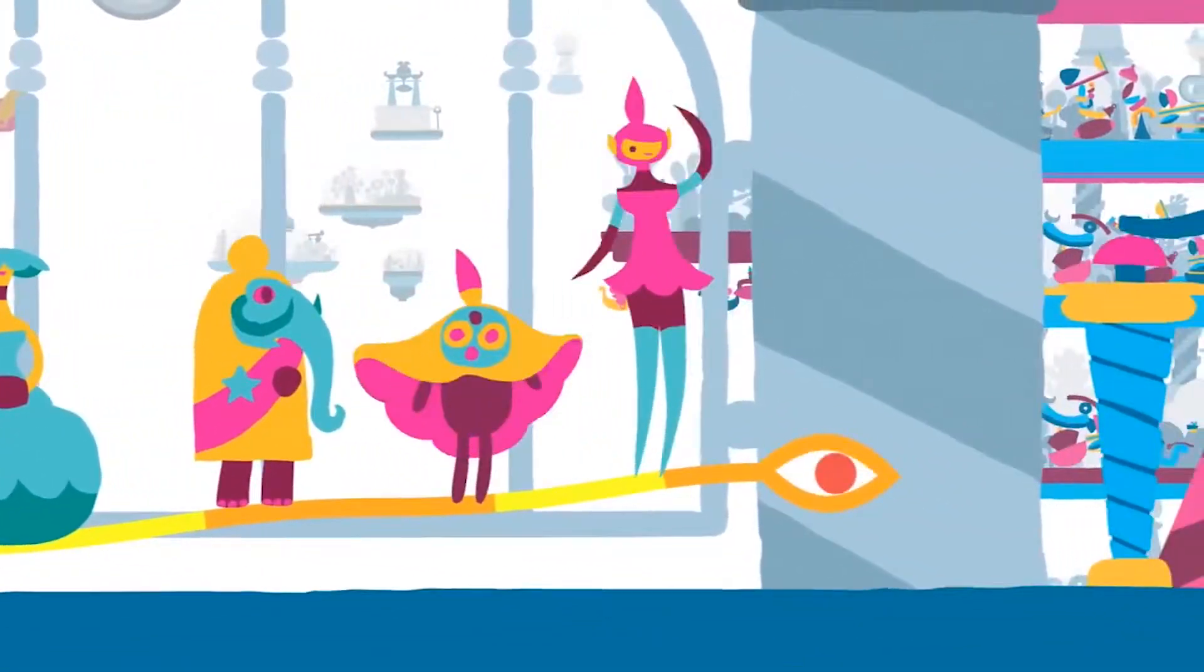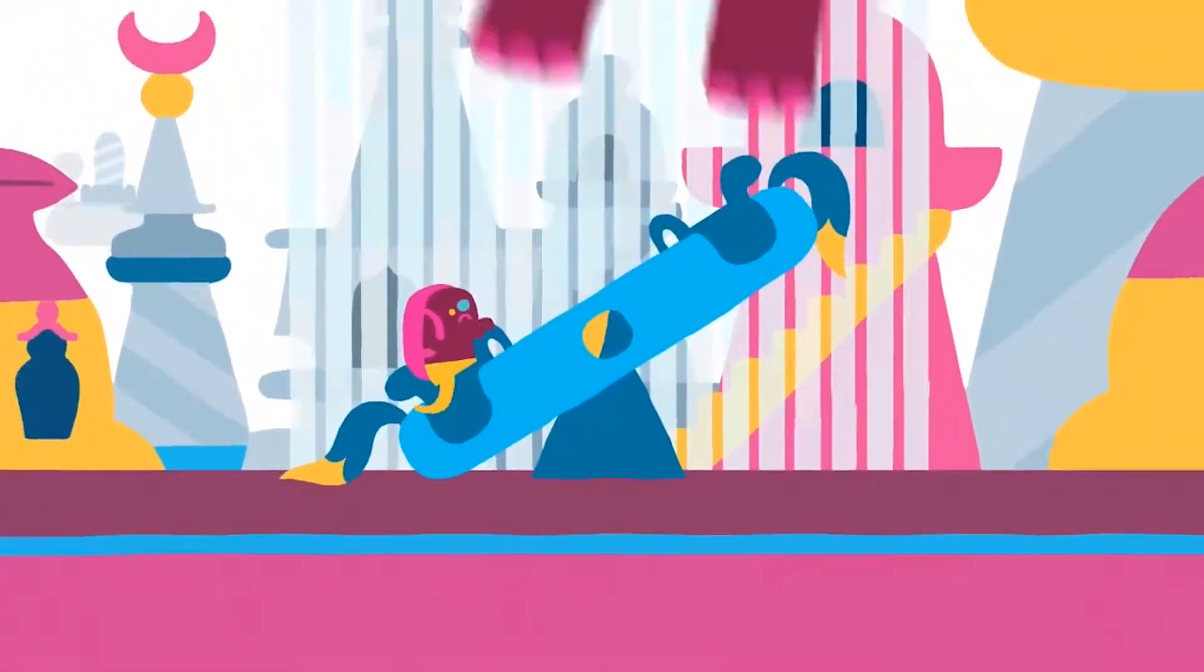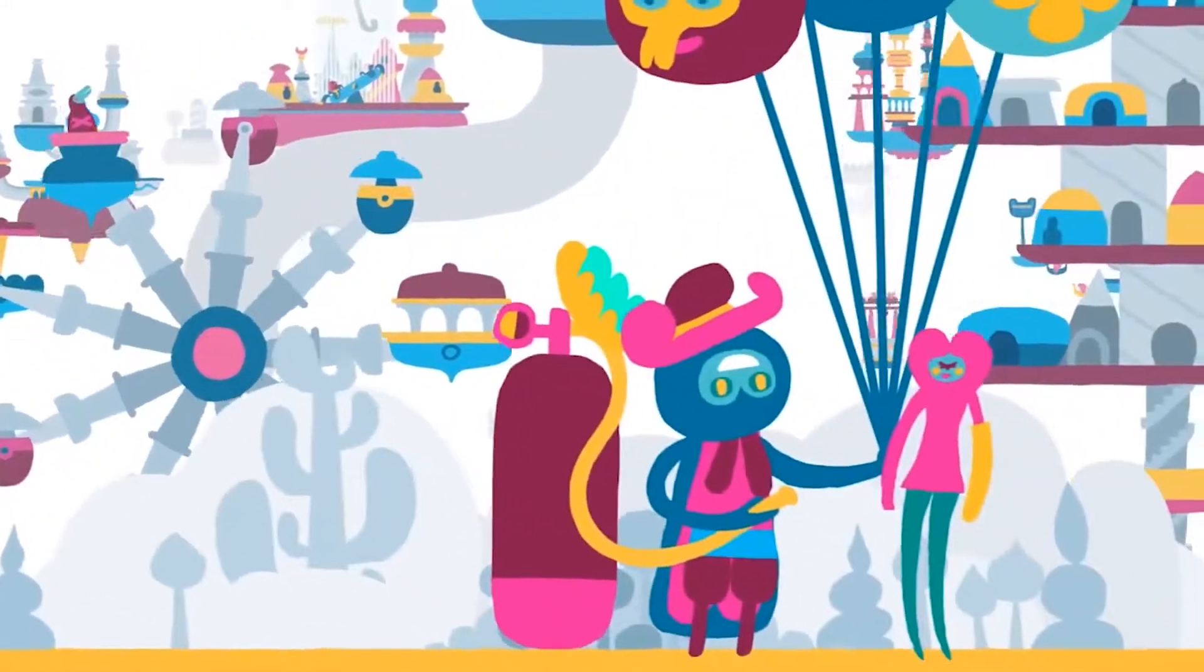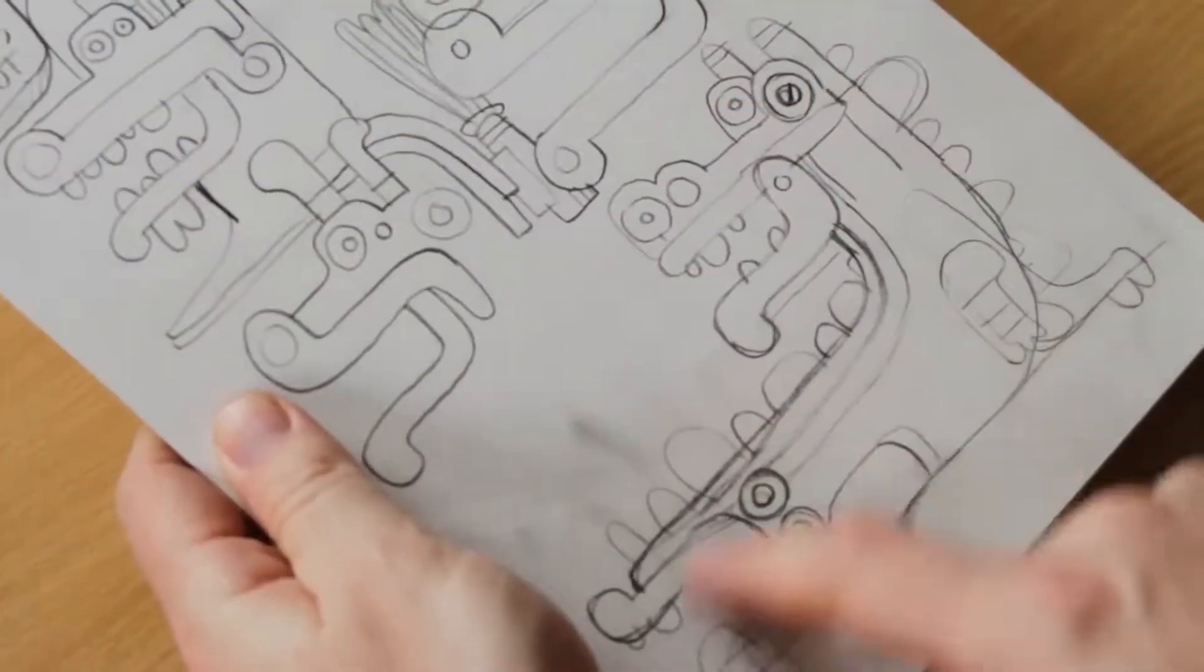Hohokum's graphic design was created by Richard Hogg and Ricky Haggett and his team at Honeyslug. Richard's designs inspired the overall look of the game, where he would design creatures and environments and Ricky and his team would animate and make them work as part of a video game. Richard Hogg explains.